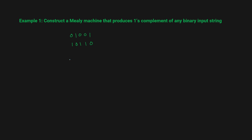Now we have to construct a machine that produces the one's complement. That is, if you give input 0 it produces output 1, and if you give input 1 it produces output 0. So with a single starting state, on input 0 you give output 1, and on input 1 you give output 0. This is how we construct a simple Mealy machine where the output depends on the input.